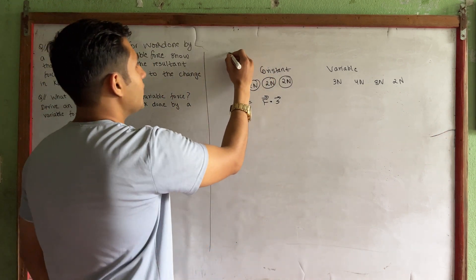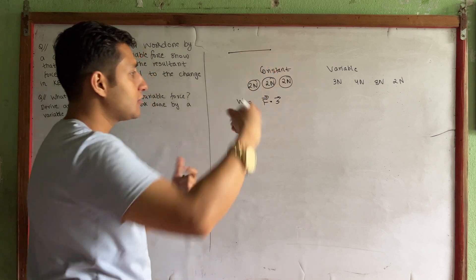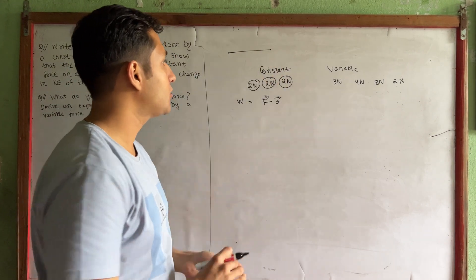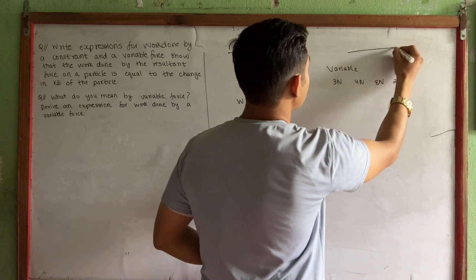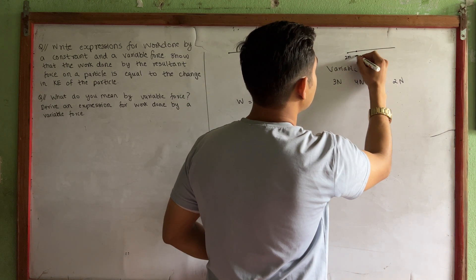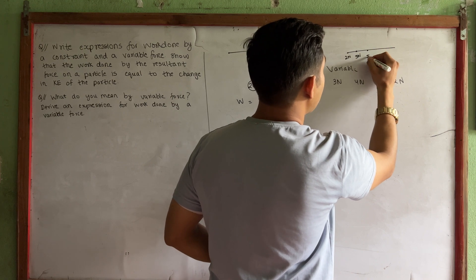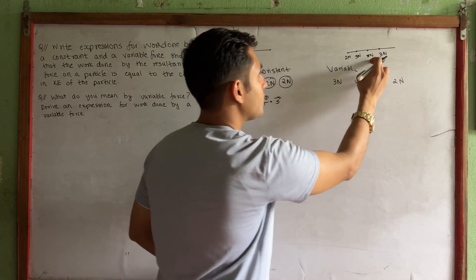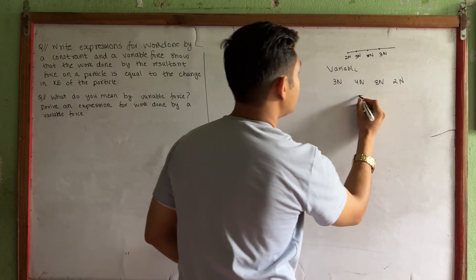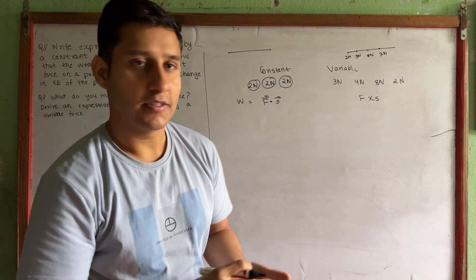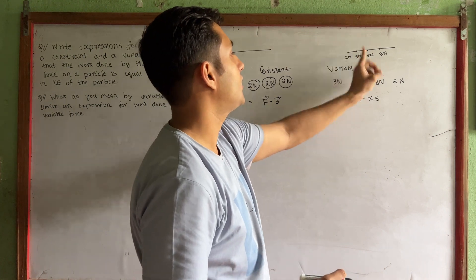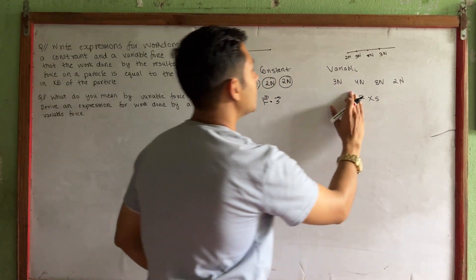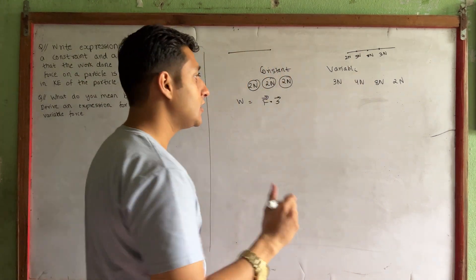For a constant force, work done is equal to F into S — force multiplied by displacement. For a variable force, such as when force changes from 2N to 3N to 8N to 3N, we cannot simply use F into S because the force is changing.